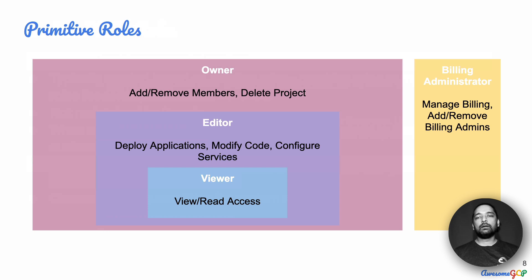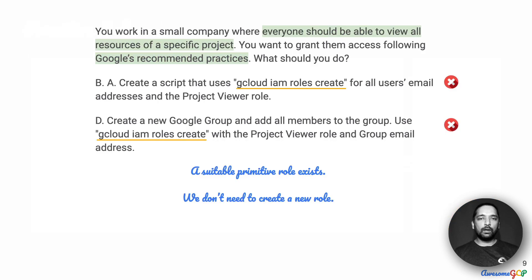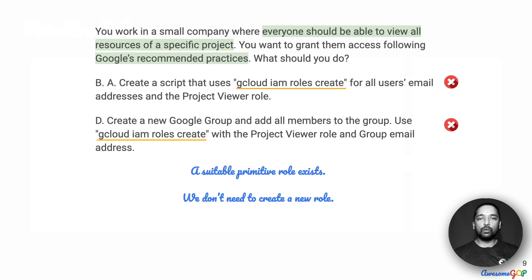In this case, however, there are some roles — specifically a primitive role — that suits our requirement. The primitive roles themselves, the major ones, are viewer, editor, and owner. Viewer grants read access to resources. Our requirement is that everyone be able to view all resources of a specific project. Therefore, an existing suitable primitive role exists and there is no need to create a new role. With that understanding, we can eliminate options B and D, which both suggest creating a new role that is unnecessary for us.